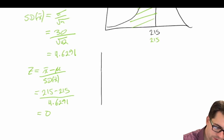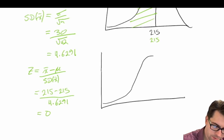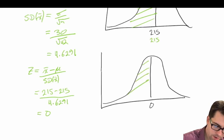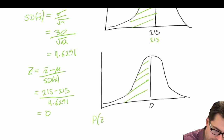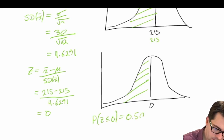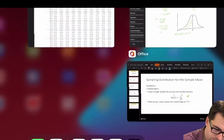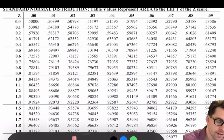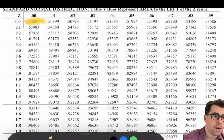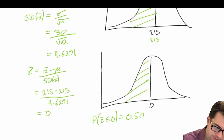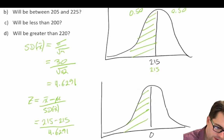We draw our standard normal curve, centered around 0, and the area to the left is going to be equal to 0.50 — the probability that z is less than or equal to 0 equals 0.50. We can double-check on our z-table: when we have a z-score of 0.0, we have a probability to the left of 0.5000. So that is exactly what we found in question A.